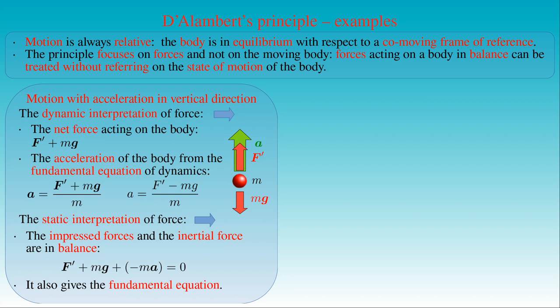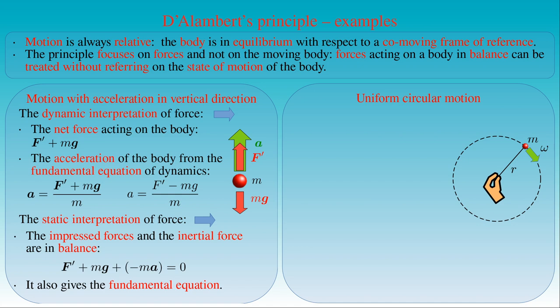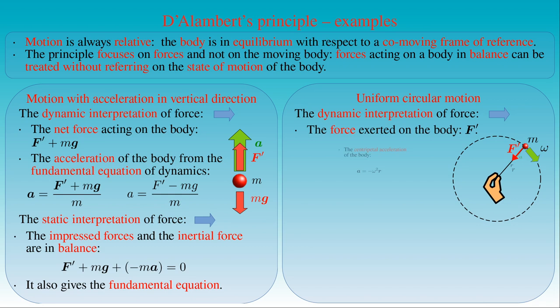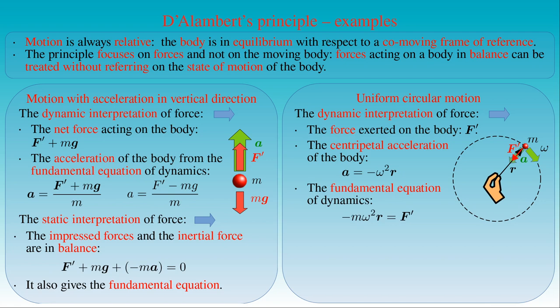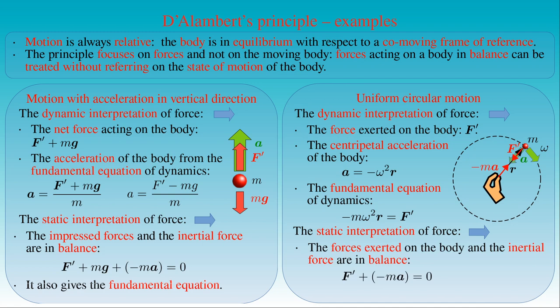The second example is uniform circular motion, where a body of mass m is attached to a string and whirled in a circle of radius r at constant angular velocity ω. The dynamic interpretation says that the force f' exerted by the hand through the string produces the centripetal acceleration given by minus ω² times the position vector r, so the fundamental equation gives minus mω²r equals f'. The static interpretation states that f' and the inertial force minus m times a — equal to mω²r — are balanced. This inertial force pointing outward from the center is called the centrifugal force, and has meaning only within the static interpretation.